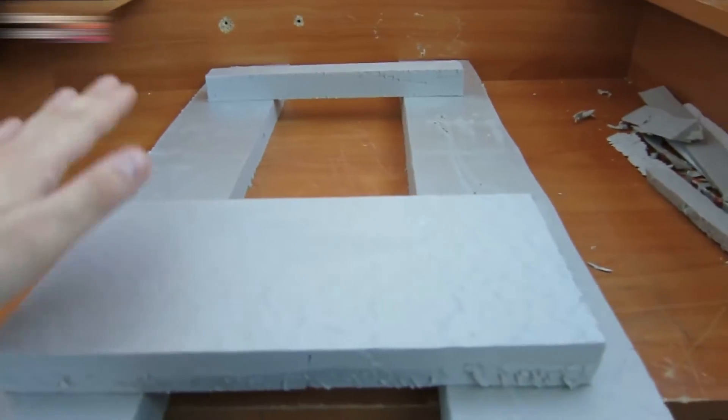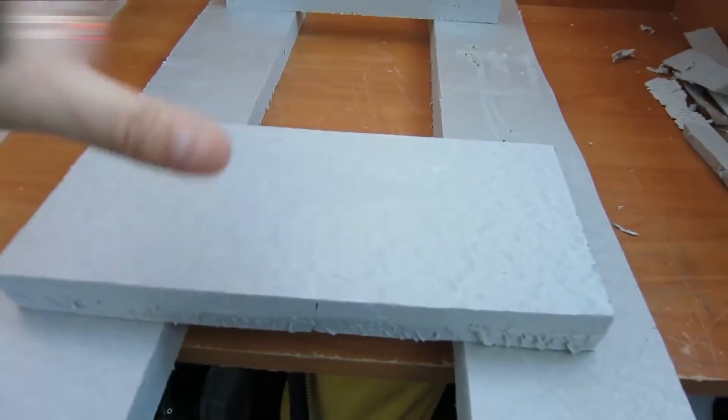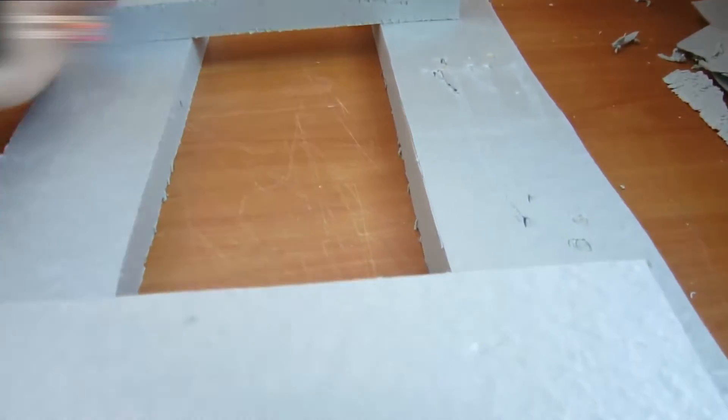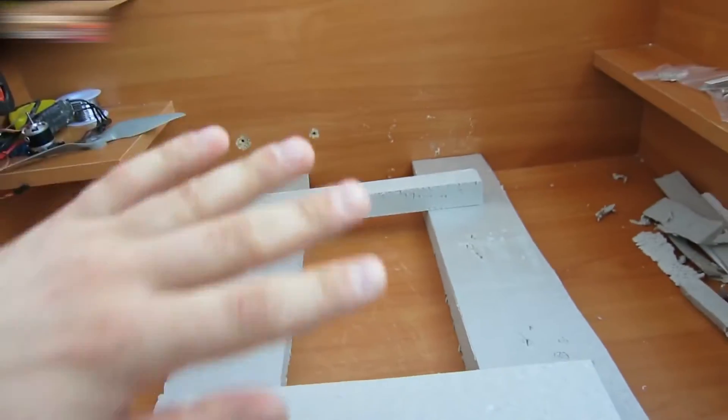Take two more pieces of Styrofoam, a bigger one and a smaller one. The size doesn't matter here. Glue them to the base and shape this piece like a car with a streamlined smooth front part.